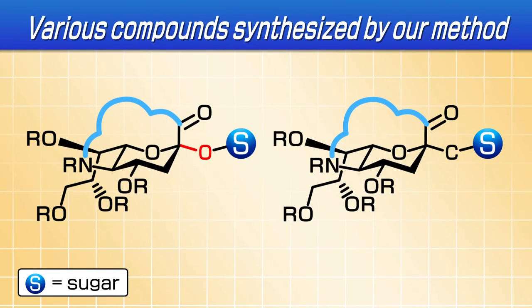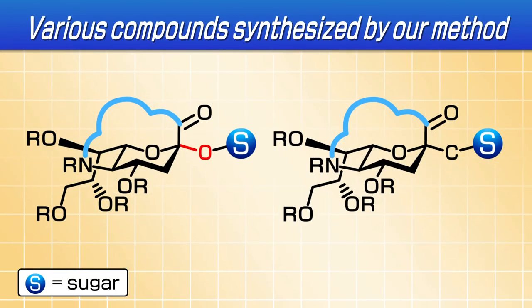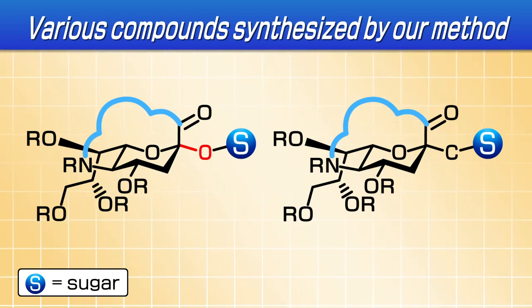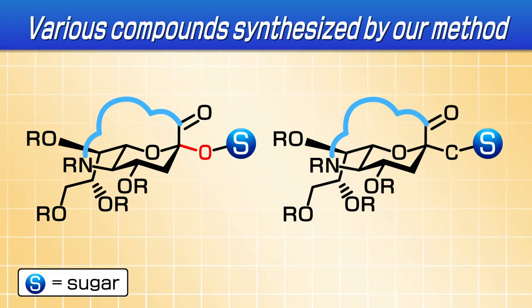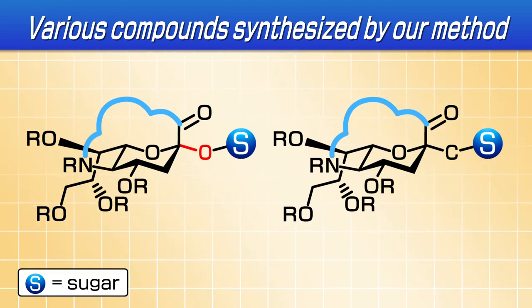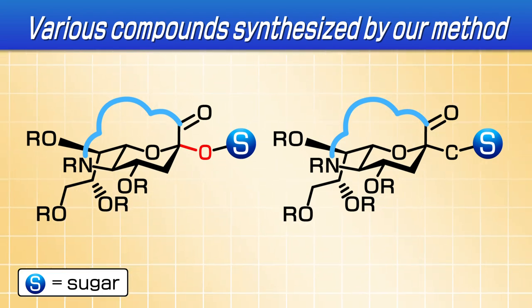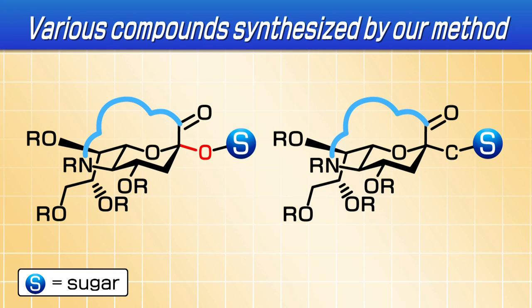Using this breached sialic acid, we successfully synthesized various sialic acid-containing compounds that were not obtainable by conventional methods. For example, we synthesized a C-glycoside compound — a glycoside through carbon atom bonding that does not occur in nature — which is useful for vaccine development.